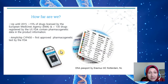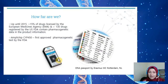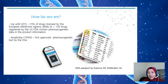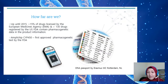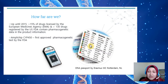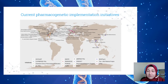The AmpliChip CYP450 was the first pharmacogenetic test approved by the FDA — it is a chip with a panel of CYP450 enzymes important for determining drug response. An example of a DNA passport is one used by Erasmus MC Rotterdam in the Netherlands, where patients send a blood sample to the lab, undergo pharmacogenetic testing for a list of genes, and receive a DNA passport listing all relevant pharmacogenetic information involving genes responsible for drug response and toxicity.